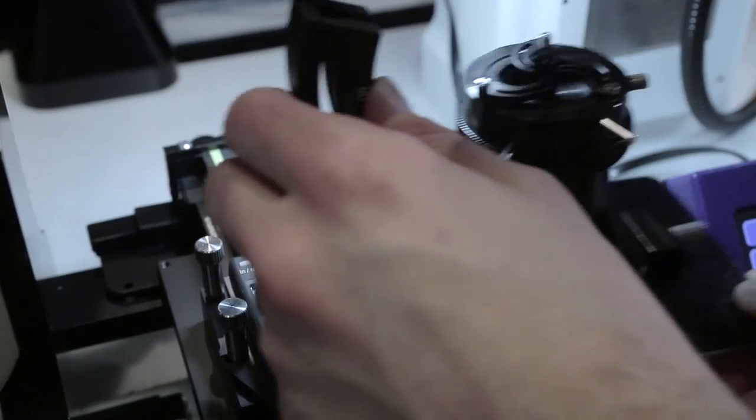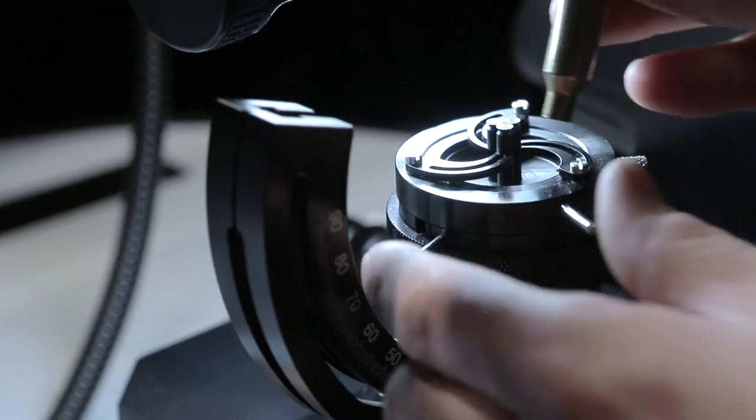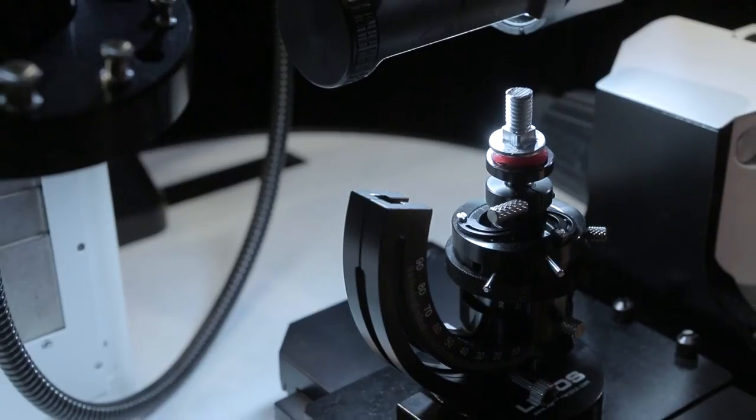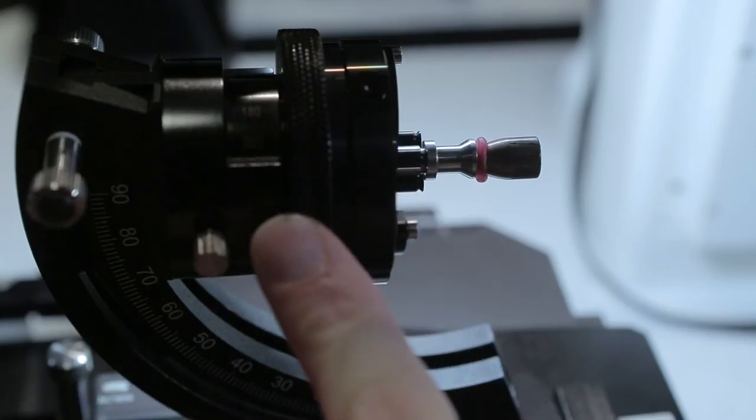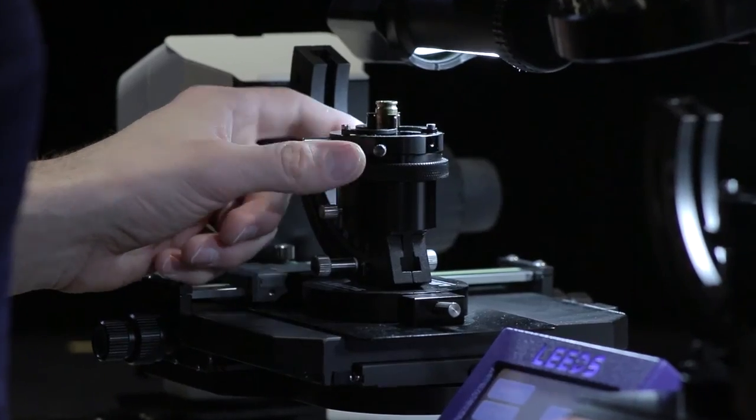The universal holder provides unique versatility and can hold samples as small as a 30-thousandths inch wire up to a 10-gauge shot shell without the use of any additional attachments.